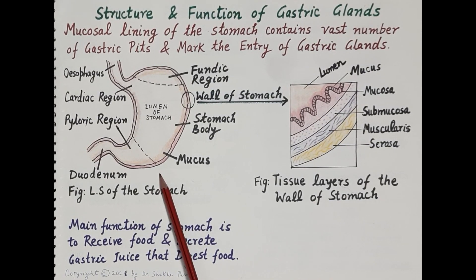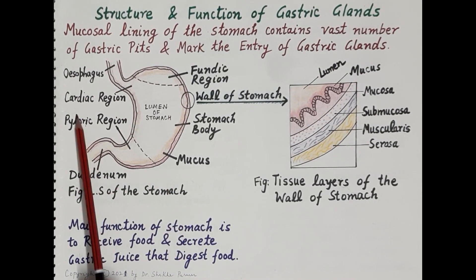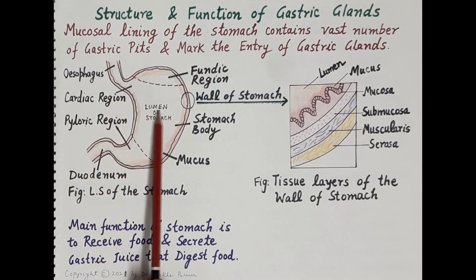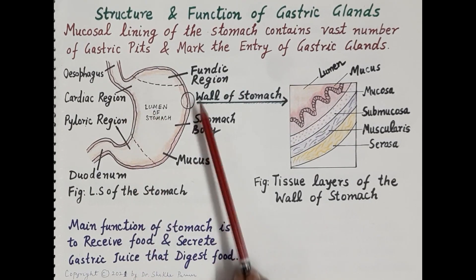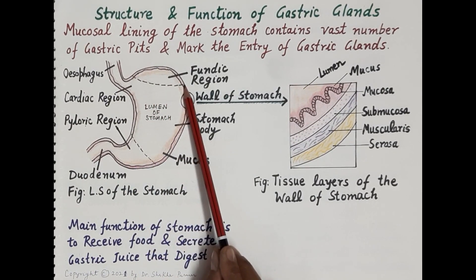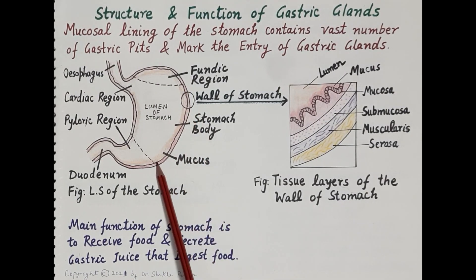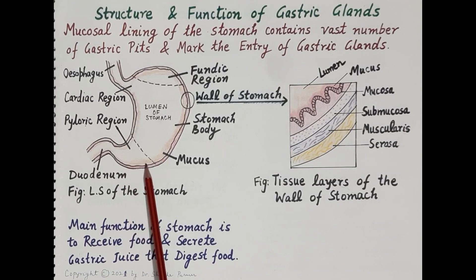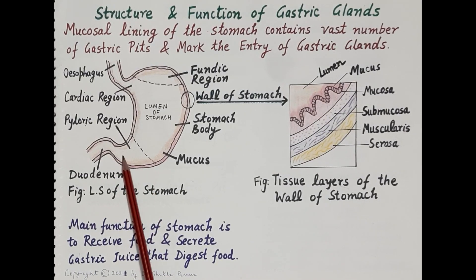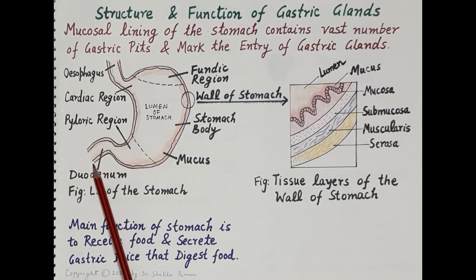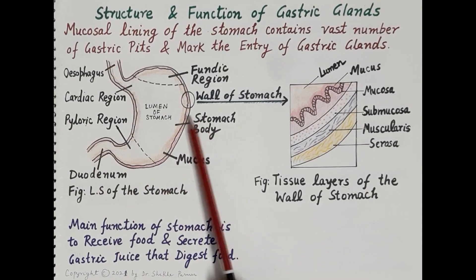The human stomach is composed of four main regions. The first is the cardiac region, which connects the esophagus with the stomach. Then there is the dome-shaped fundic region, or fundus. The main stomach region is called the body of the stomach. The fourth part is the pyloric region — a funnel-shaped pylorus that connects the stomach with the duodenum, which is the first part of the small intestine.